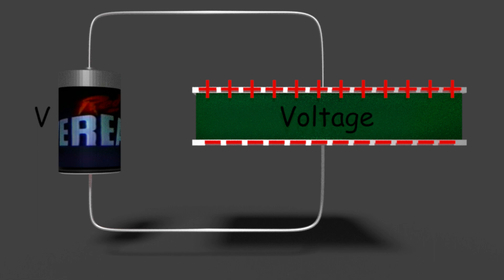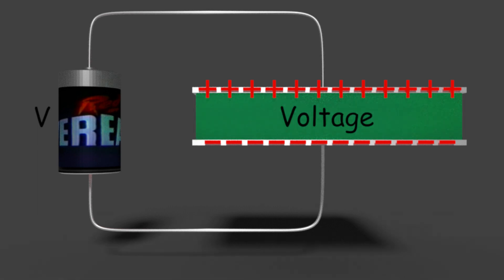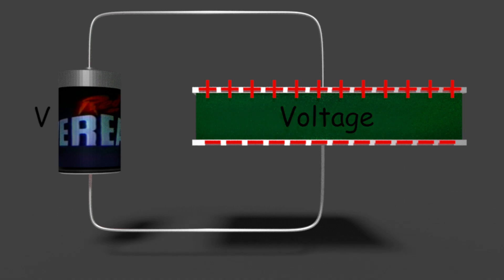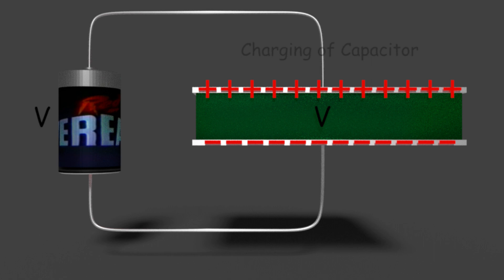The charge accumulation increases with time, but no current crosses the gap between the plates. This is because the two parallel plates are separated by a dielectric, which prevents the flowing of current through it. As much charge is accumulated on the opposite plates, the voltage across the capacitor increases accordingly, continuing to increase until it becomes exactly equal to the voltage of the source battery. The process of accumulating charge in the capacitor and the associated increase of voltage across it is called charging of the capacitor.